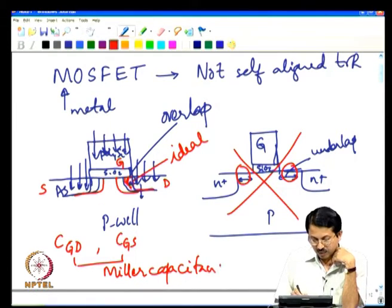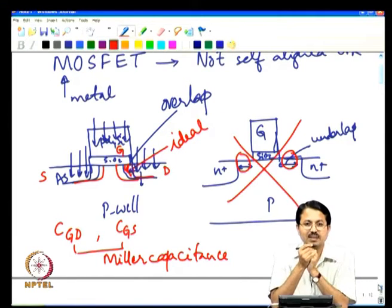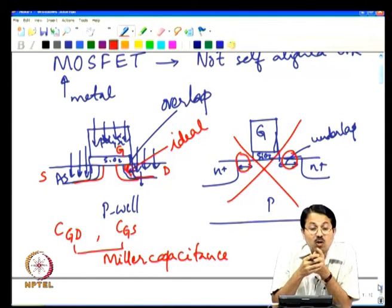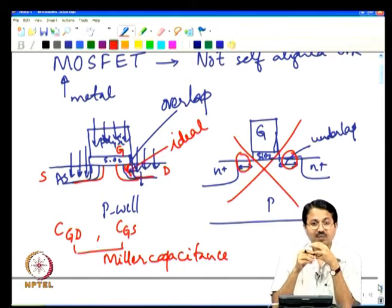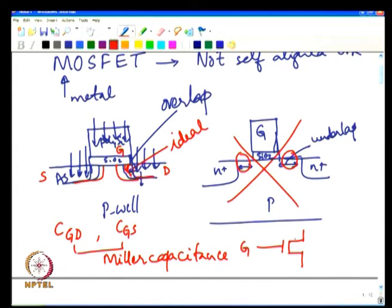The overlap capacitance is essentially the capacitance between your gate and drain. Especially when using a transistor as an amplifier, your gate-to-drain parasitic capacitance should not be too high — it will impact the bandwidth of the transistor. This parasitic capacitance from input to output of the transistor is not good. So ideally zero overlap is best, but very difficult to achieve. Non-zero positive overlap is acceptable, but certainly not negative overlap — that is underlap.